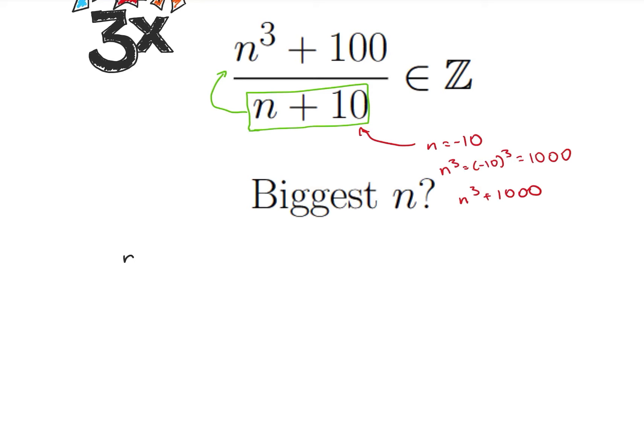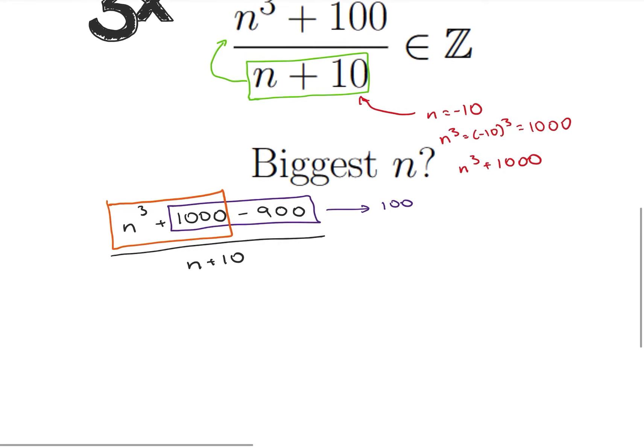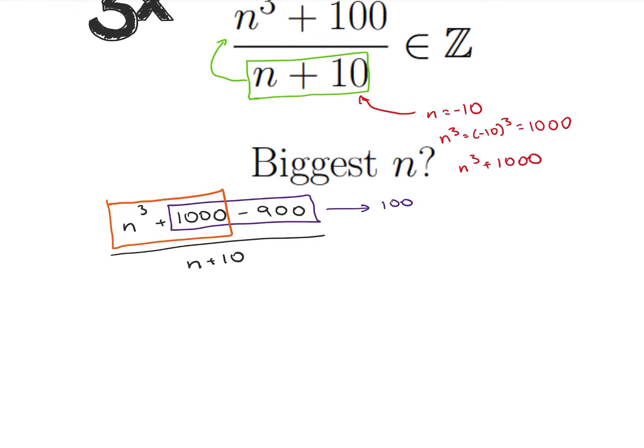So let's think about that now. Let's rewrite our equation above as n cubed plus 1000 minus 900. And what we notice then is that this on the right is now still equal to 100. But what that does for us is it gives us this guy, which is divisible by our denominator, which is n plus 10. So n cubed plus 1000, I said that that's divisible by n plus 10. Let's go ahead and prove it real quick.